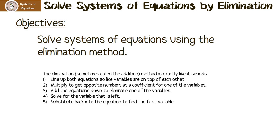To solve using the elimination method, the first thing we have to do is line up both equations so like variables are on top of each other. Then we multiply to get opposite numbers as a coefficient for one of the variables. We then add the equations down to eliminate one of the variables, solve for the variable that is left, and then back substitute to find the other one. Let me show you how this works.